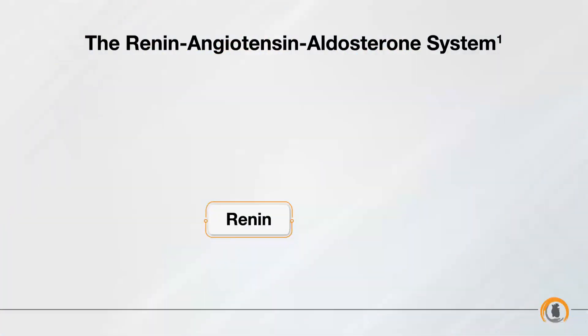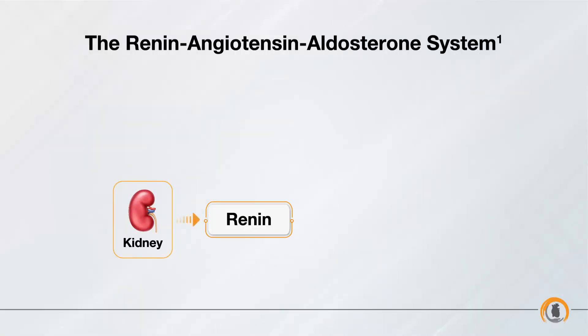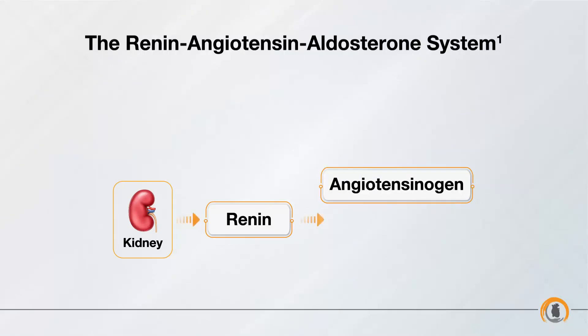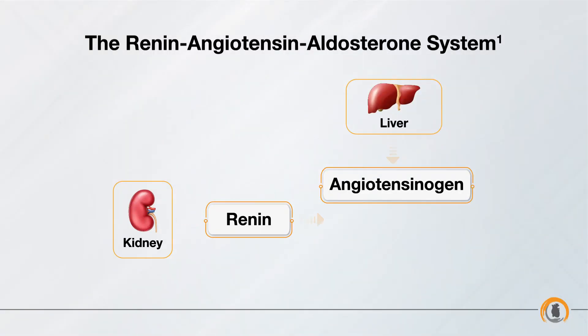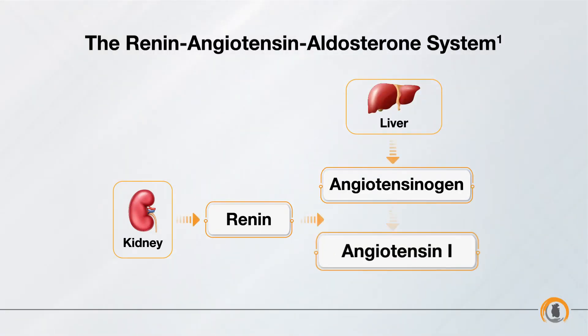Renin is secreted by the kidneys in response to lower fluid volume. It further acts on angiotensinogen, an enzyme secreted by the liver, and converts it to angiotensin 1.